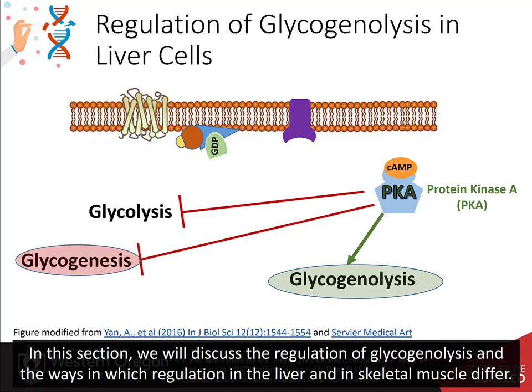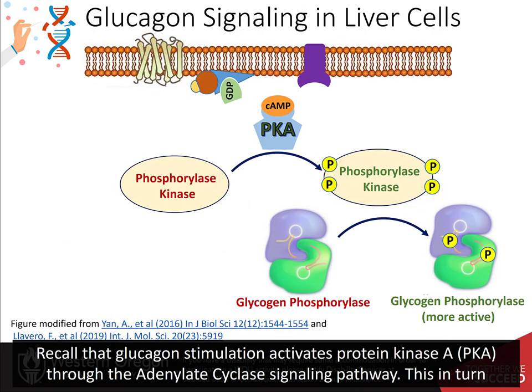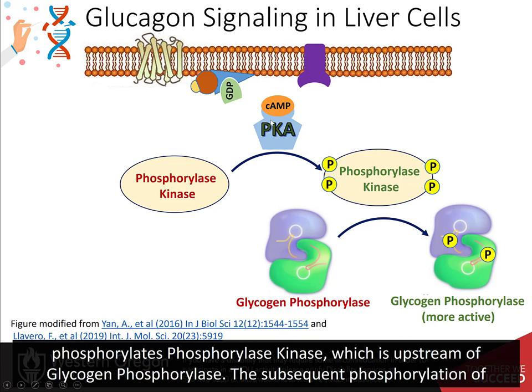In this section we will discuss the regulation of glycogenolysis and the ways in which regulation in the liver and skeletal muscle differ. Recall that glucagon stimulation activates protein kinase A, PKA, through the adenylate cyclase signaling pathway.